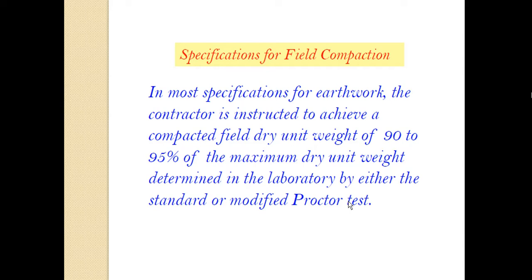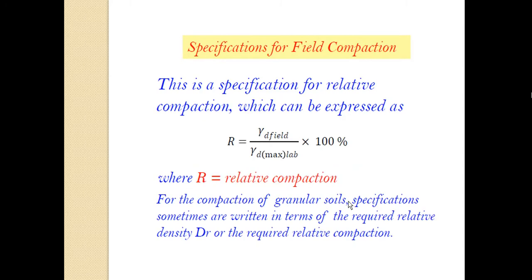This factor can be represented in terms of relative compaction. Relative compaction R is equal to the dry density obtained in the field divided by the maximum dry density obtained in the laboratory. In the laboratory we obtain maximum dry density using laboratory conditions - modified or standard Proctor test - compacting the soil in different layers each given a number of tamper blows. In the field we do not get this full dry density, so this ratio is expressed as relative compaction, multiplied by 100 to express it as a percentage.